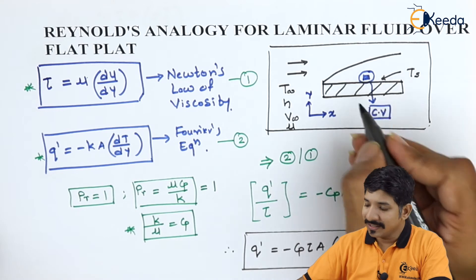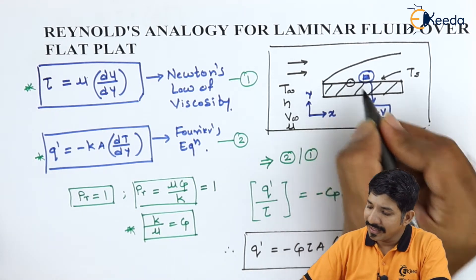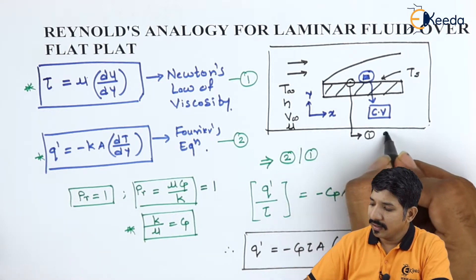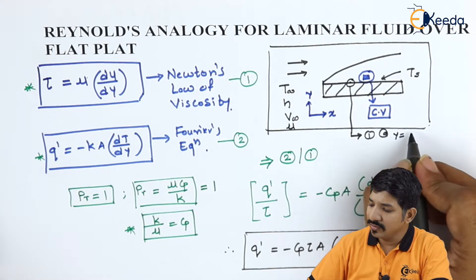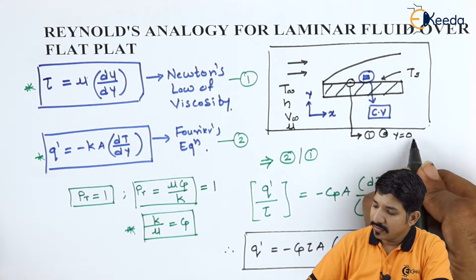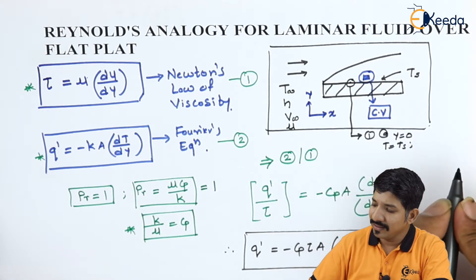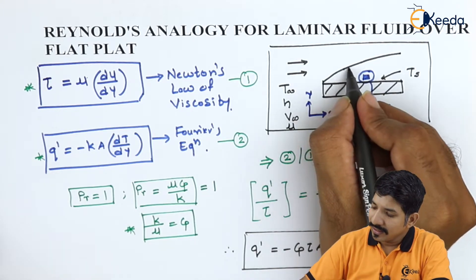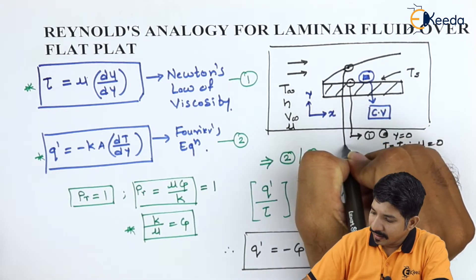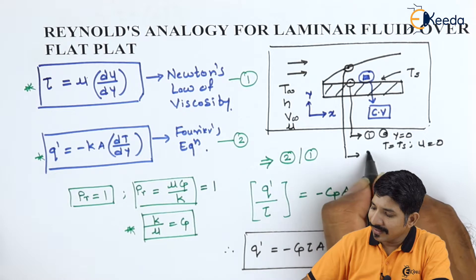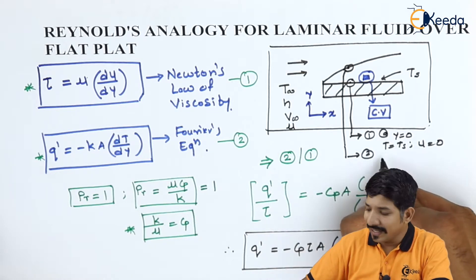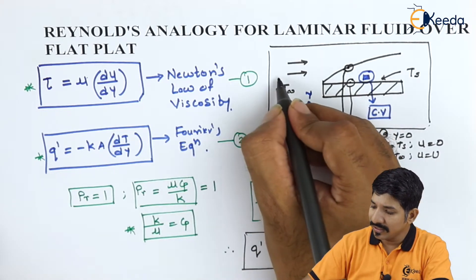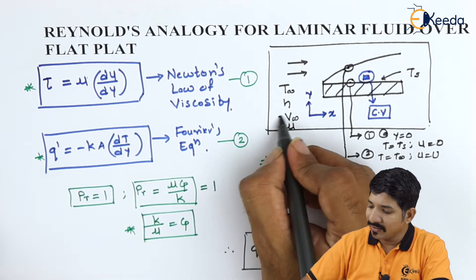So the first boundary condition that can be written is, at y equal to 0, we have temperature as Ts and velocity as 0 itself. And then the second boundary condition, let's say at this point, can be written as at y equal to del, we know that T is nothing but T infinity and U is nothing but the free stream velocity, let's say V infinity or let us call this as capital U.